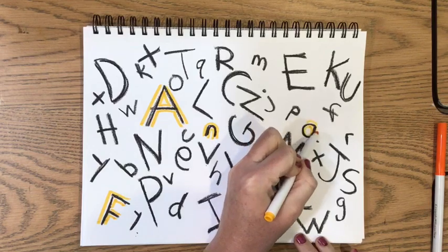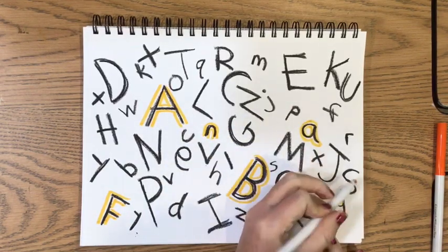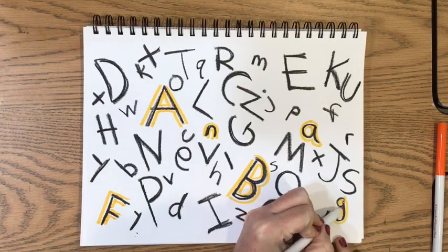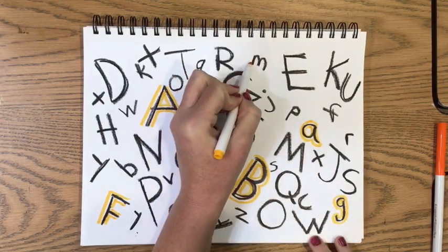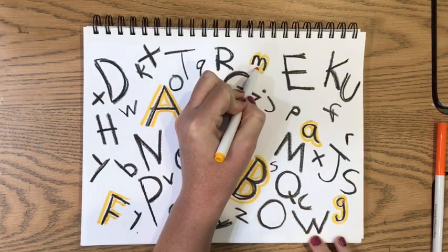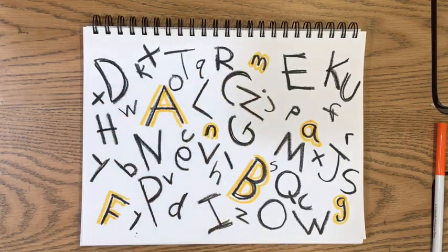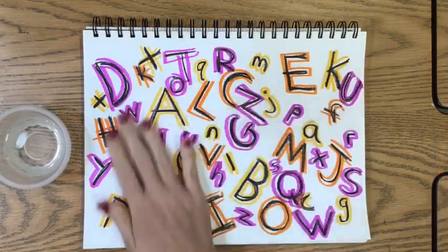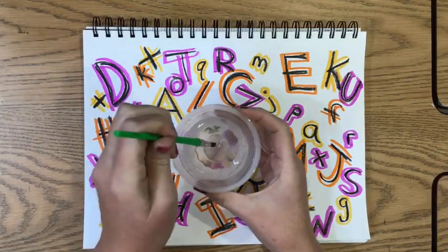Do about a third of the letters with one color and then do the rest of the letters with the other two colors. Take your time and work carefully and neatly. Again trying to scatter those colors across your paper.